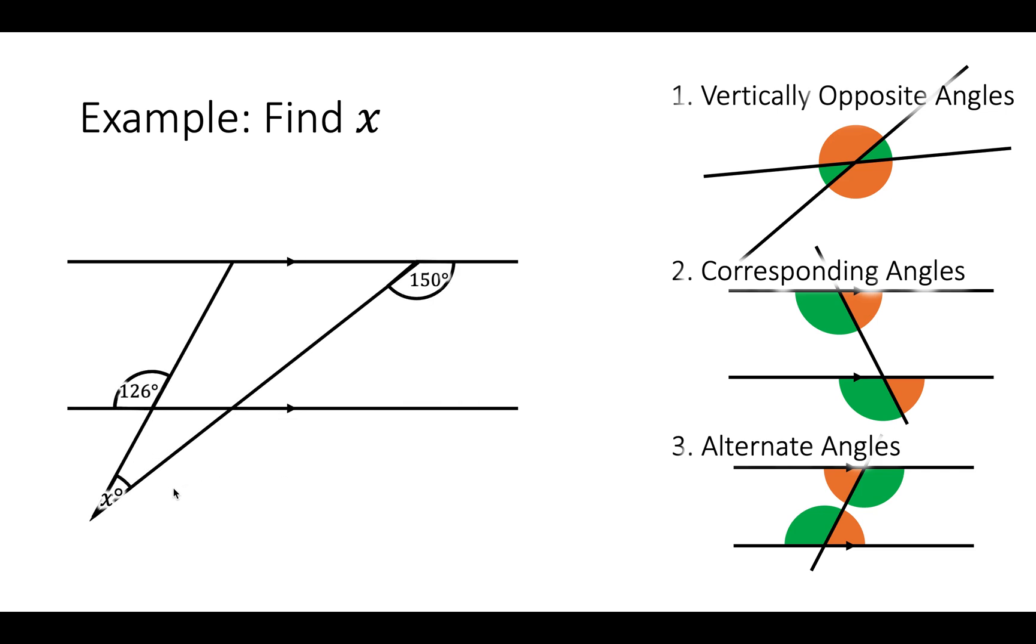I've got this here, and I want to find this angle here. This X angle here. And I've got 126 degrees labelled here, and 150 degrees labelled here. Well, first I know that the 126 forms a set of alternate angles with this one over here. So this angle over here is also 126 degrees.